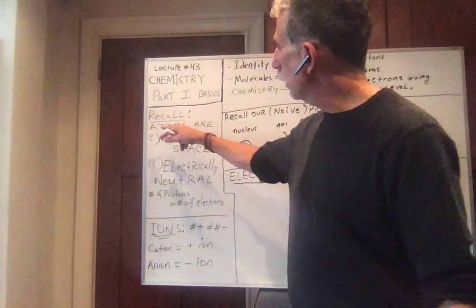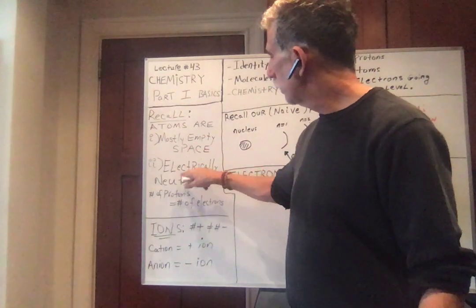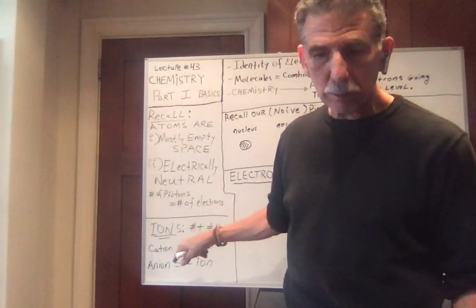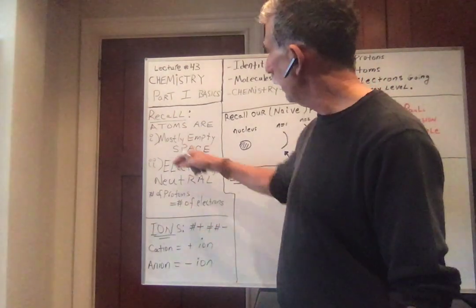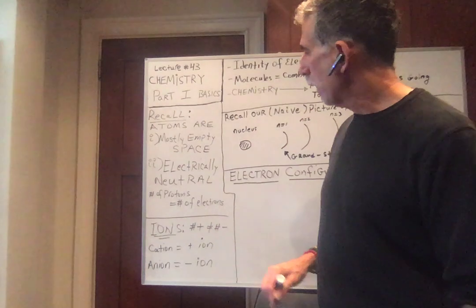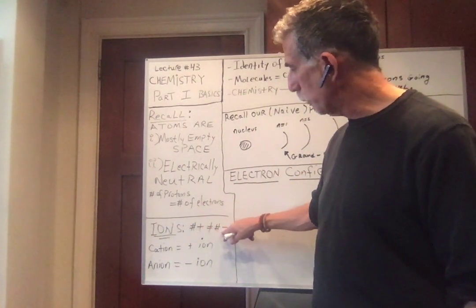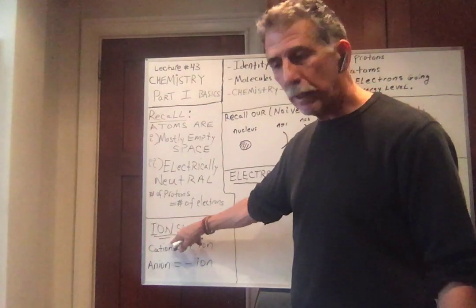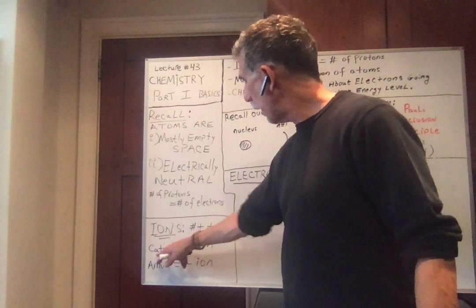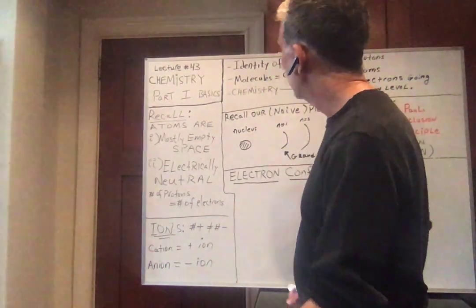Let's recall our picture for atoms. Atoms, by definition, are certainly electrically neutral - the number of protons equals the number of electrons, and atoms are mostly empty space. If the number of protons is not equal to the number of electrons, we call those ions. A positive ion is a cation, and a negative ion is an anion.